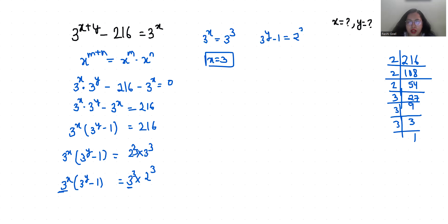So 3^y = 2^3 + 1. 2^3 is 8 plus 1. So 3^y = 9 and 9 I can write it as 3^2. So y = 2.